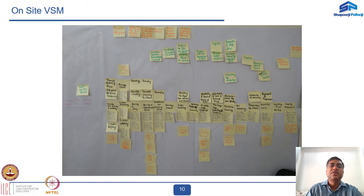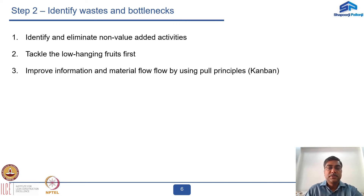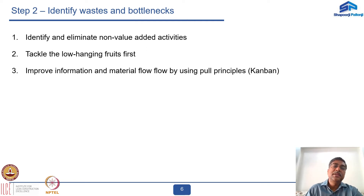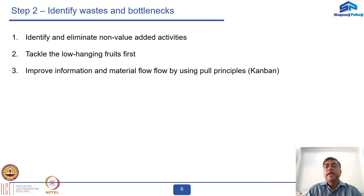Once you have all the information and have put down all the activities with relevant data, step two is to identify wastes and bottlenecks. Once we have mapped all the activities, we can find out which areas have possibilities of waste and where the bottlenecks are. We need to identify and eliminate non-value-added activities. Tackle the low-hanging fruits first — the 20% of areas giving you 80% of the problems — because addressing those will immediately show a large impact on the activity and improve information and flow using lean principles.